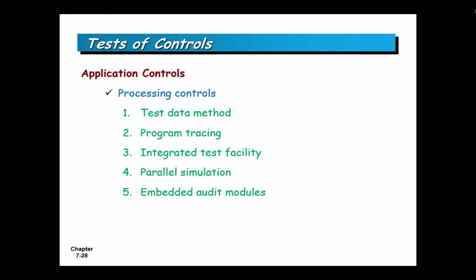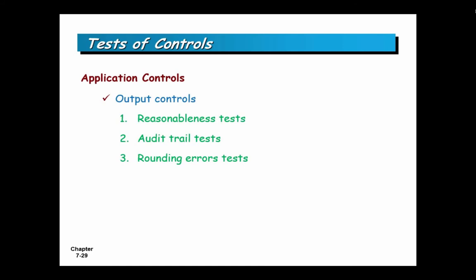These are part of what's considered continuous auditing — something Rutgers is pretty big in, particularly in the graduate program. For outputs, you want to make sure there are audit trails, make sure that rounding is done right, et cetera.